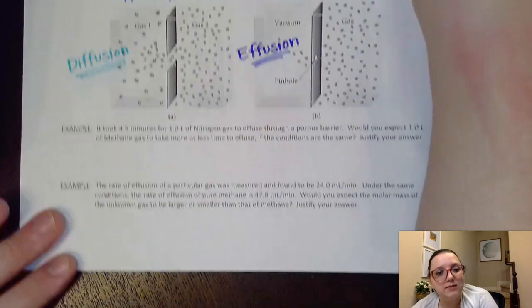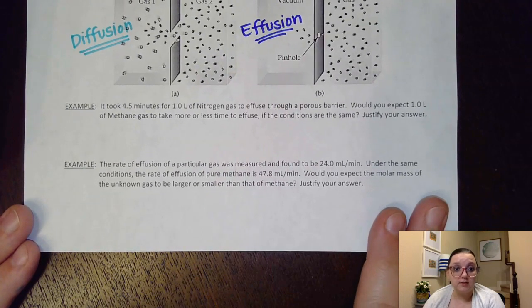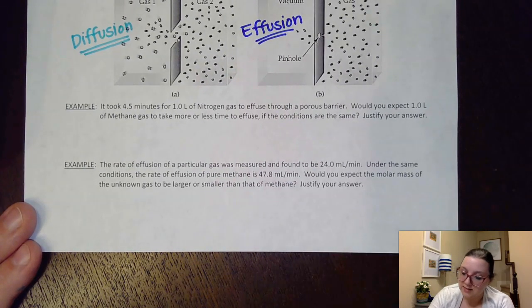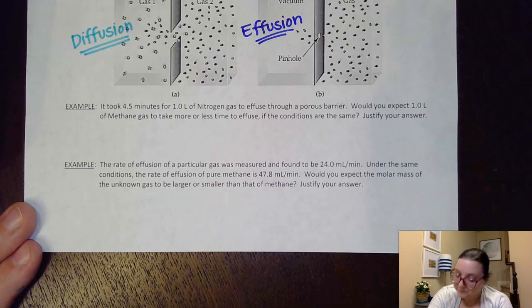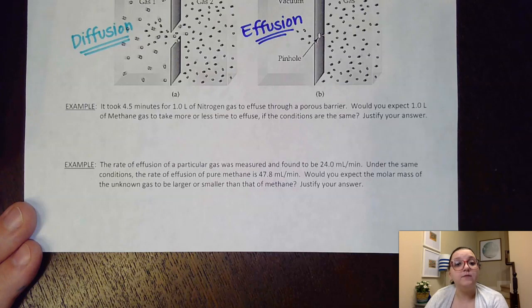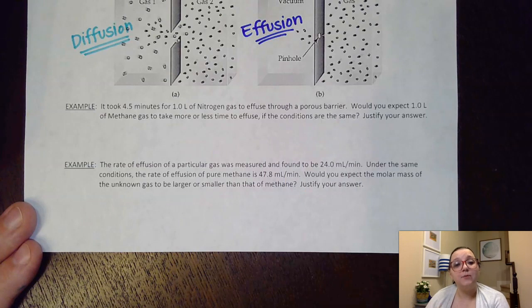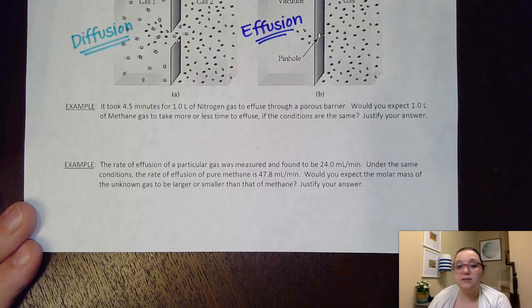So let's look at some examples that you might be asked if you're trying to use Graham's law as a justification. So this first example here says it took 4.5 minutes for one liter of nitrogen gas to effuse through a porous barrier. Would you expect one liter of methane gas to take more or less time if the conditions are the same? Now the reason why they mentioned the conditions being the same is that would indicate that temperature is the same. So kinetic energy should be consistent for these two gases. So what that means is that my big difference here is going to be my molar mass.